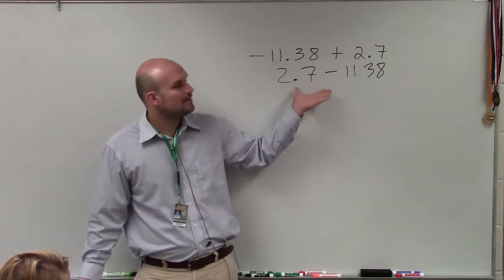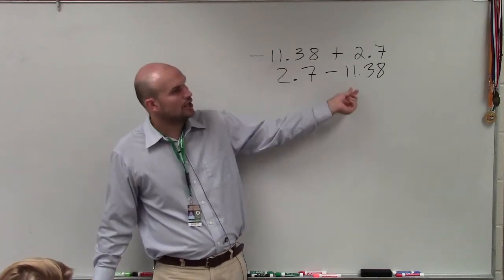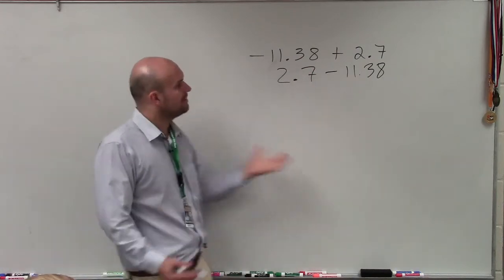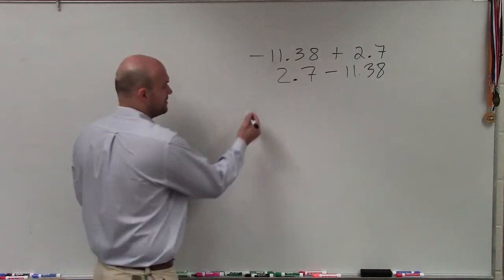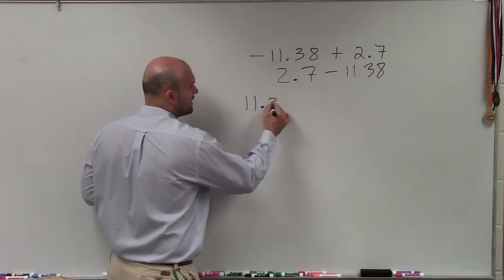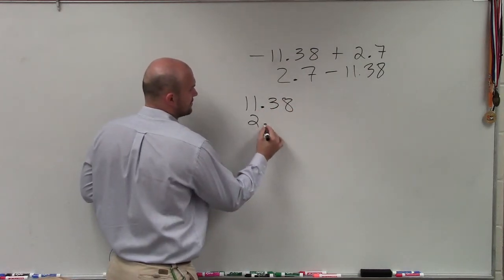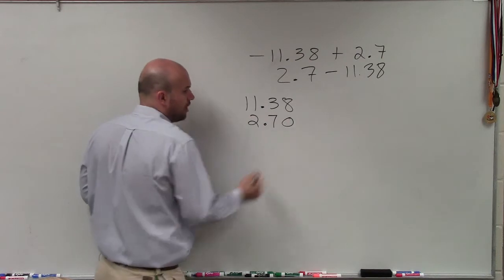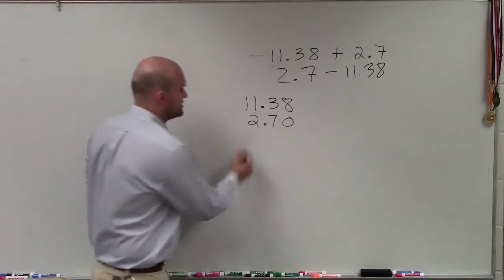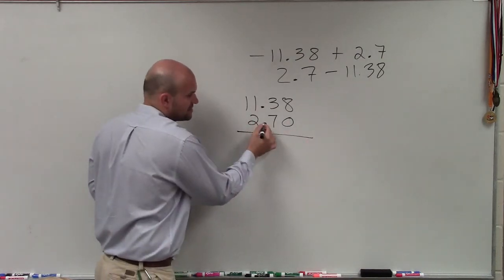So when you have a problem like this, when you're subtracting the larger from the smaller, what we want to do to continue our algorithm is actually always subtract the larger from the smaller. Placement value for the 0. Align the decimal points just like adding.